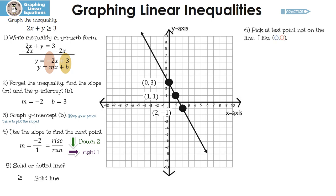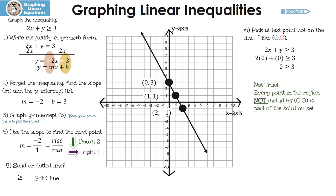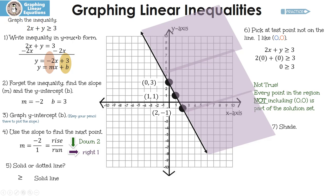Now we need to pick a test point not on the line — 0, 0 is the best option. So here's our inequality: we're going to put 0, 0 in there and we have 0 is greater than or equal to 3. Well, that's not true. So every point in the region not including 0, 0 is part of the solution. Since 0, 0 does not make the inequality true, it's not in our region — it's not part of the solution — so I have to shade the other side.